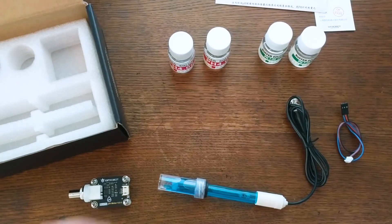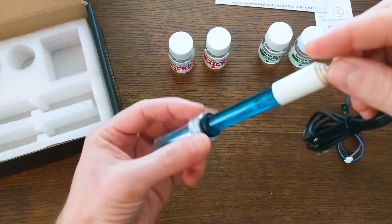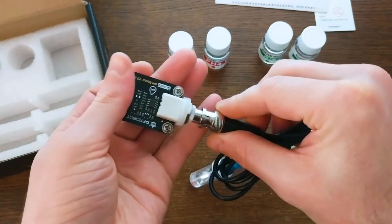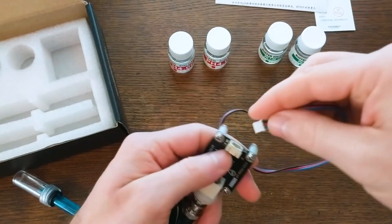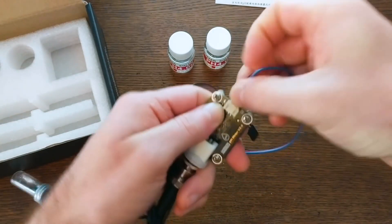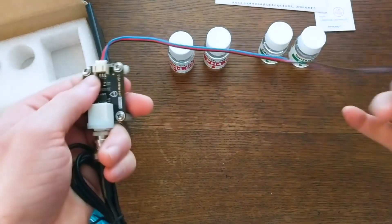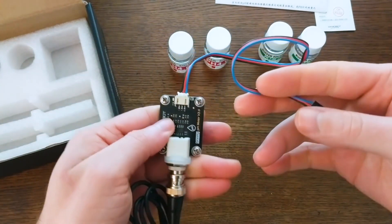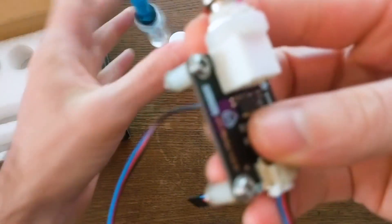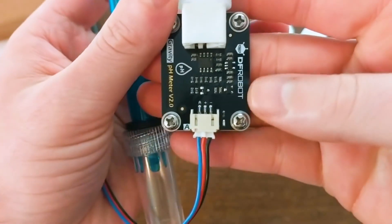First off, we have the probe. You put this end into the solution you're measuring. Right now it's in a neutral solution. And then this end connects to the circuit board. This end of the circuit board has another type of connector where this cable plugs into. Here's where it breaks out the ground, voltage input, and analog output wires. These are what you connect to your microcontroller or whatever else you want to handle the analog readings.